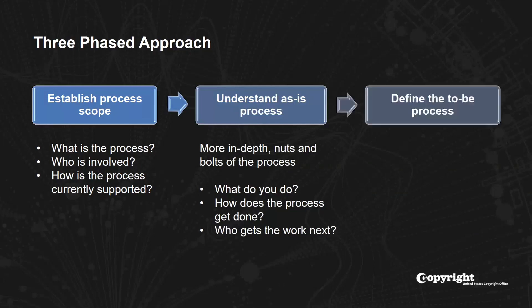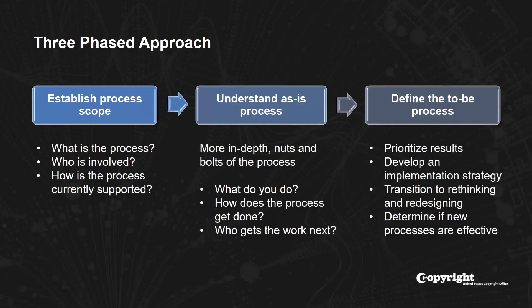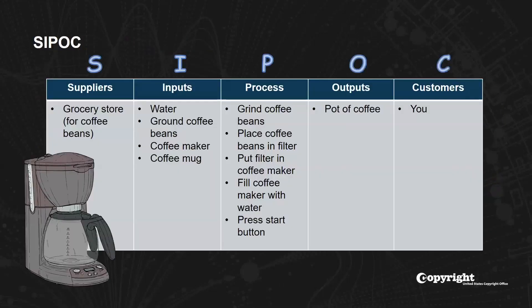During the third and final phase, the office transitions into rethinking and redesigning the processes. This includes determining ways to confirm that the new process or processes are effective and achieving the expected outcomes and goals of each of the business units and for the mission and services of the Copyright Office as a whole. This concludes with prioritizing the results and developing an implementation strategy. During the first phase of BPR sessions, we use a pictorial tool called SIPOC to look at a process and identify all the high-level elements that go into it.